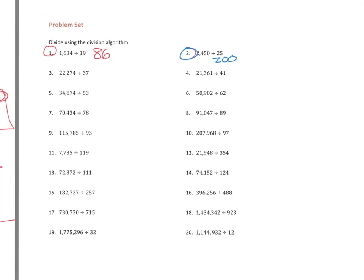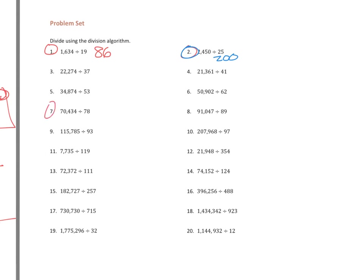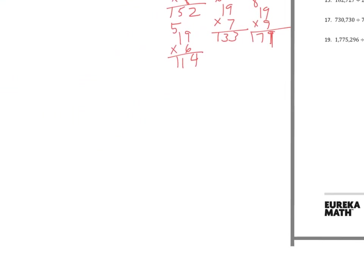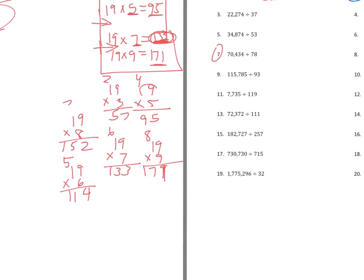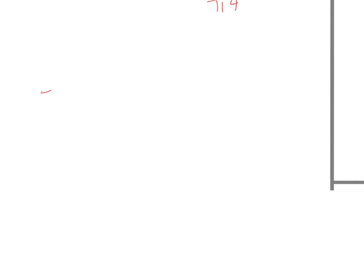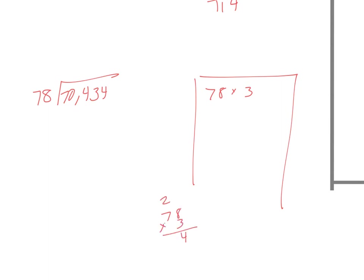So, what I'll do now is I'm going to pick another one partway down, and I'll take a harder one. Let's do 7. We'll do that one off to the side down here. So, 7, and this is 70,434 divided by 78. So, again, I'm going to make my toolbox off to the side. 78 times 3. That's 24, so 234.